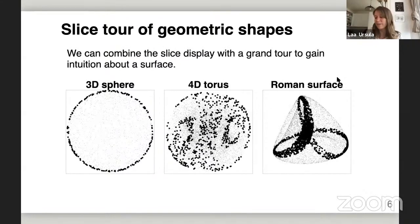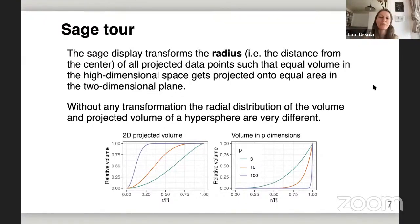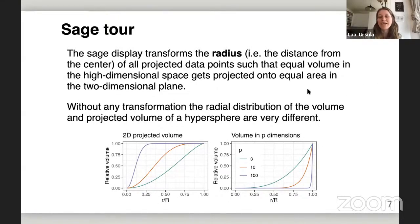I also want to introduce the second new display, the SAGE tour, which addresses the crowding problem. At the heart of it, the volume from a high-dimensional space gets projected onto low dimensions in a way that concentrates near the mean or center of the projection. We think about this in terms of hyperspheres in p dimensions — p being the dimensionality of the space. Looking at the plot on the right: it shows the volume in p dimensions and how much is captured within a fraction of the radius, for 3, 10, and 100 dimensions. As we increase p, a lot of the volume gets pushed out towards the maximum radius.